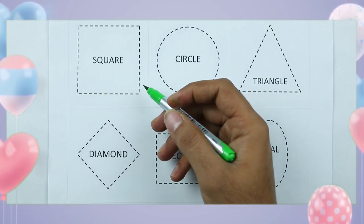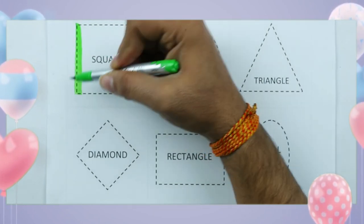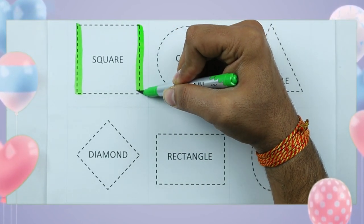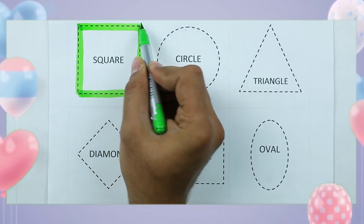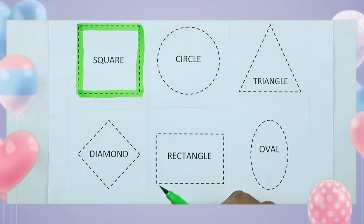It's square. One line, two line, three line, four line. Two sleeping lines, two standing lines.